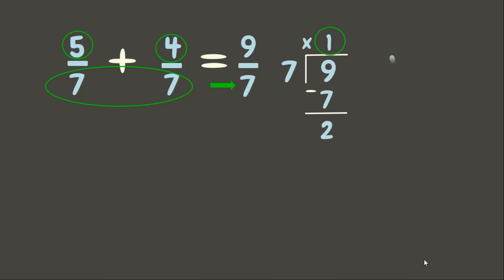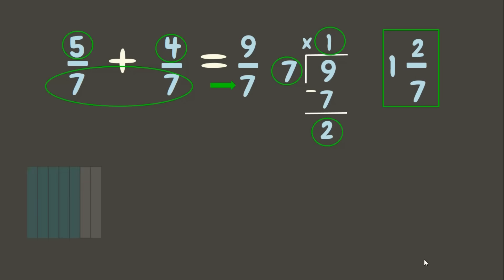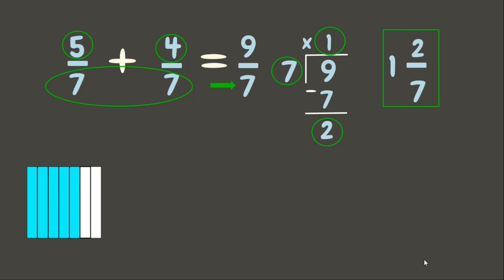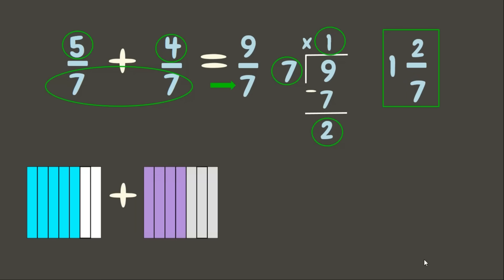Our answer is one as the whole number, two as the numerator, and seven as the denominator. Our final answer is one and two-sevenths. Let us check our answer by drawing some representations.